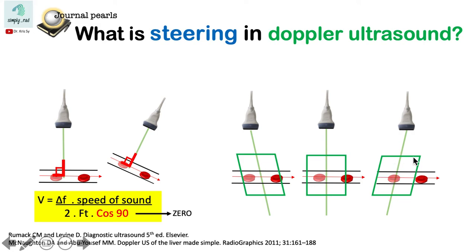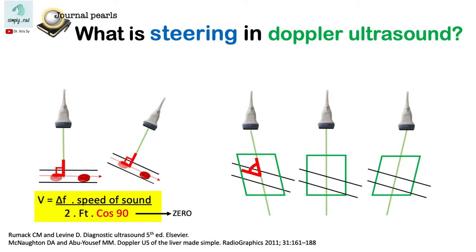These boxes help us visualize the angle of the beam. If you notice here, even though we adjusted the beam, the angle is less than 90 degrees but still does not reach the 60-degree angle that we want. In reality, the vessels are not perfectly parallel as drawn here — they are usually at an angle just like this. Notice now that the 60-degree angle is obtained with the help of the steering of the beam.